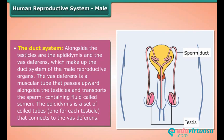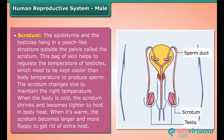The epididymis is a set of coiled tubes, one for each testicle, that connects to the vas deferens. The epididymis and the testicles hang in a pouch-like structure outside the pelvis called the scrotum. This bag of skin helps to regulate the temperature of the testicles, which need to be kept cooler than body temperature to produce sperm.